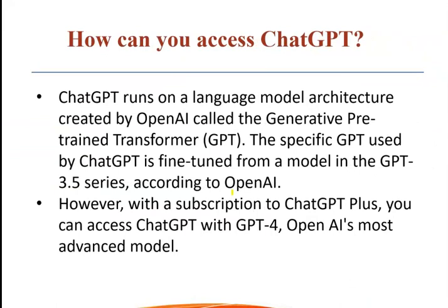ChatGPT runs on the language model architecture which OpenAI created — the Generative Pre-trained Transformer, or GPT. The specific model that ChatGPT uses is a fine-tuned model from the GPT-3.5 series, according to OpenAI. However, with a subscription to ChatGPT Plus, there is an option to upgrade and access a more advanced model.